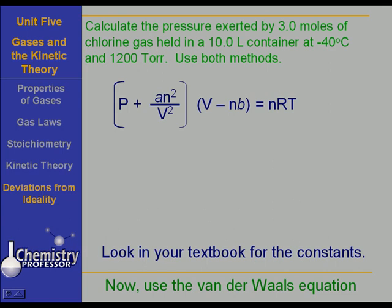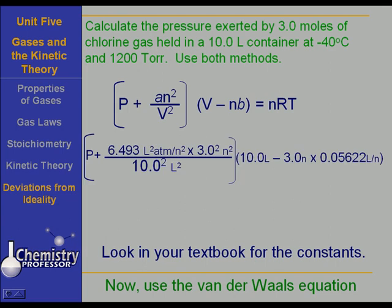Now, you're going to have to go look in your textbook for the constants. I'm going to give you the constants here. But in your textbook, you should have a table of van der Waals constants. Here is the constant. We have P plus 6.493 liter squared atmospheres per mole squared times 3 moles squared. Of course, that's our N squared, isn't it? Over 10 squared liters squared times 10 liters minus 3 moles times 0.05622 liters per mole. Now, I have given you the constants for chlorine, and it's specific for chlorine for this van der Waals.